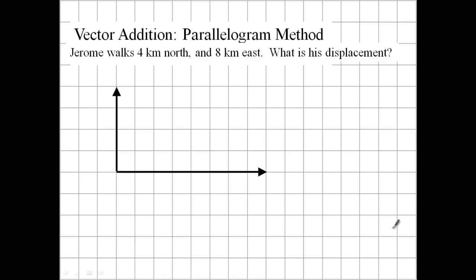Here's a very quick and dirty podcast on two different methods for adding vectors. We're just going to do a couple little problems. So Jerome walks 4 kilometers to the north and 8 kilometers to the east. What is his displacement?